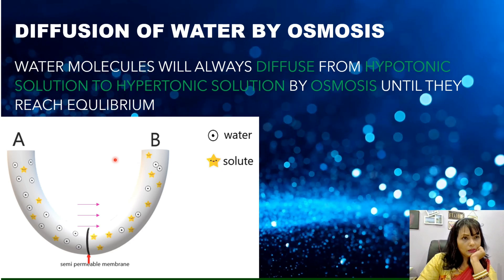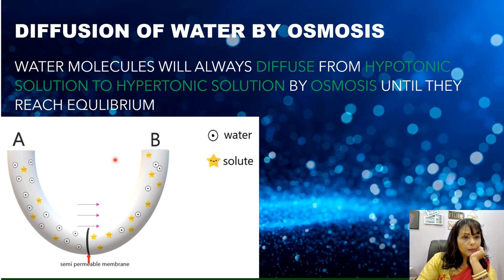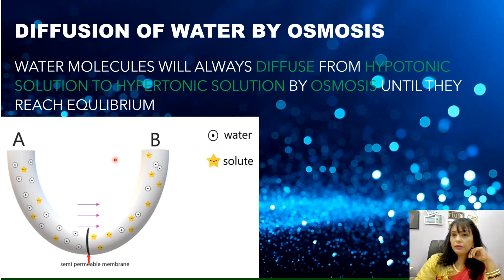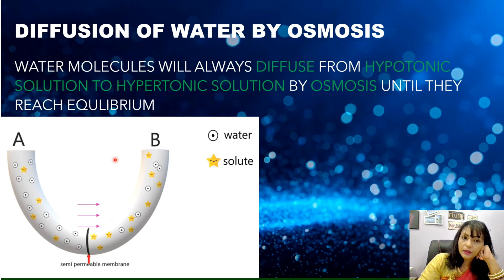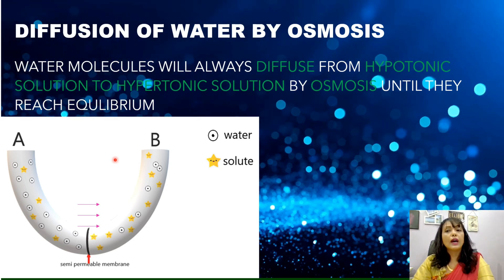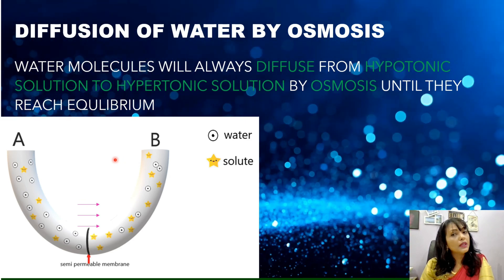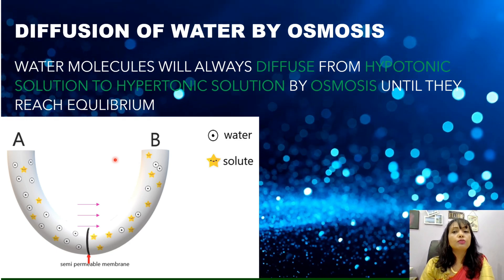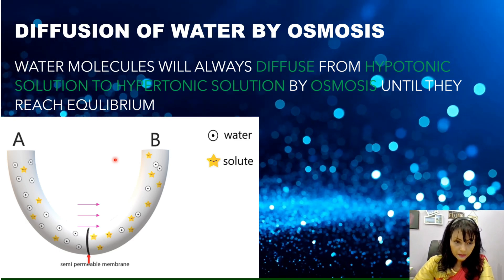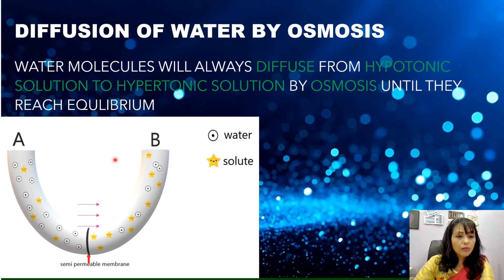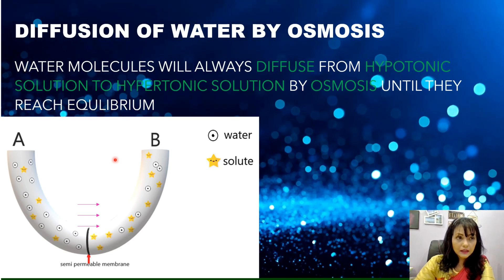All right, the second part of our discussion here will be the diffusion of water by osmosis. The water molecules will always, always will diffuse from a hypotonic solution to hypertonic solution no matter what by osmosis until they reach equilibrium. So, if you notice in this system, the water molecules will always move from A to B. The water molecules will move from A to B until they reach equilibrium.